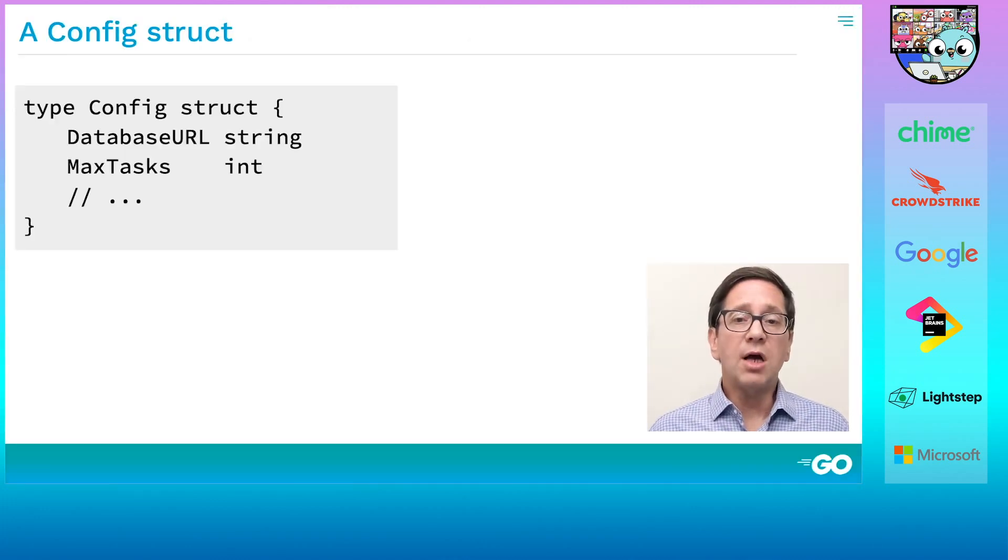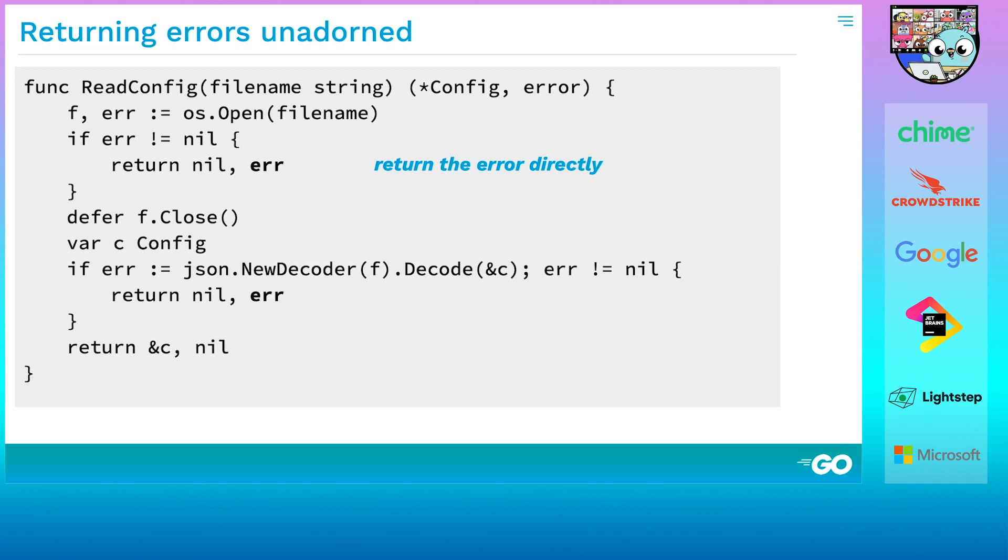Our story starts with a struct that might be used to configure a program. We're going to read the config out of a file so the program can use it. Our readConfig function opens the file, then uses the encoding.json package to decode its contents. If there's an error reading or decoding, we return it.